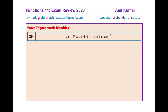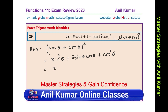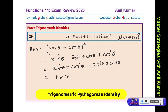Let us get back to the last two questions. The question is 1 plus 2 sin theta cos theta equals (sin theta plus cos theta) whole squared. Let us begin with the right hand side, which is (sin theta plus cos theta) whole squared. If you expand, you get sin squared theta plus 2 sin theta cos theta plus cos squared theta. Since sin squared theta plus cos squared theta is 1, we have 1 plus 2 sin theta cos theta, which is the same as the left hand side. Simple application of the Pythagorean identity along with the algebraic identity.